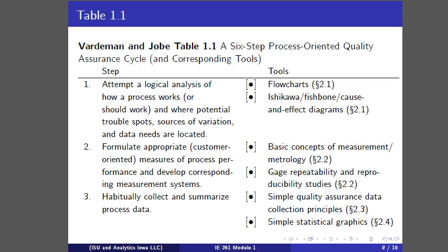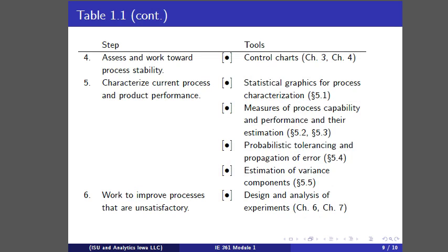The framework that we've adopted in this set of lectures is this six-step process-oriented quality assurance cycle of Vardaman and Job. We've just talked about assessing and working towards process stability. Once one brings a process to the point that its pattern of variation is consistent, that is it is stable to within basic baseline natural variation, then it makes sense to try to characterize it. Until you bring a process to consistency, you can almost argue you don't have a process.